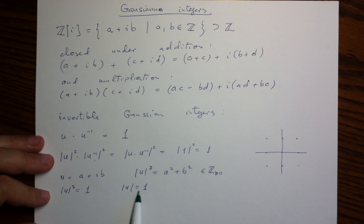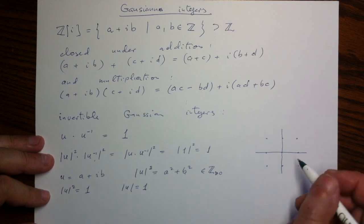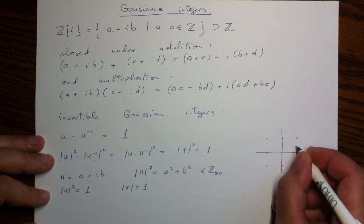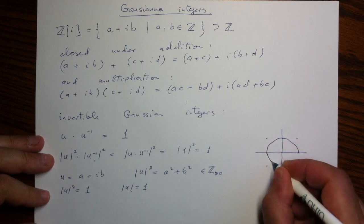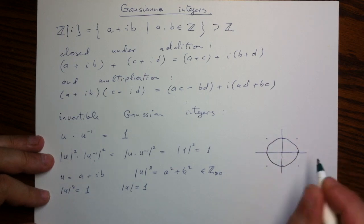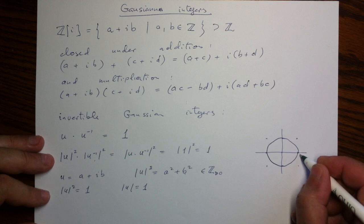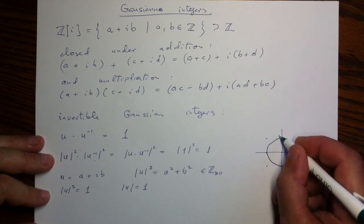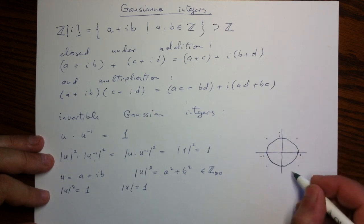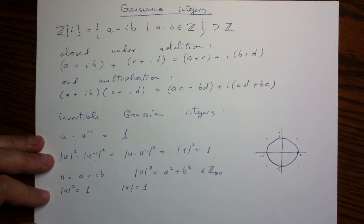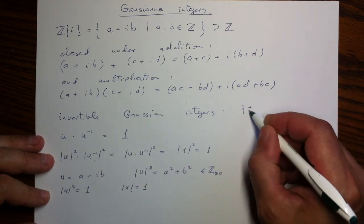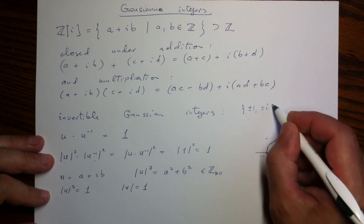And, at the same time, it should be in the distance one from the origin. But, those points are on the unit circle, so I will try to make this circle as much as I can. And, together with the condition that they have to have integer coordinates, we have only four solutions. We have one, we have i, we have negative one, and we have negative i. So, this is our conclusion, that invertible Gaussian integers are these numbers, plus minus one, plus minus i.